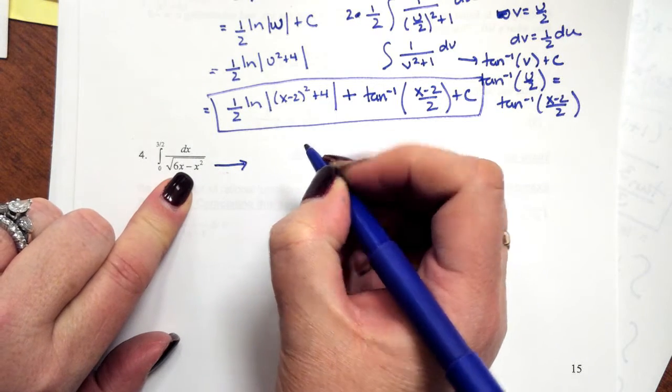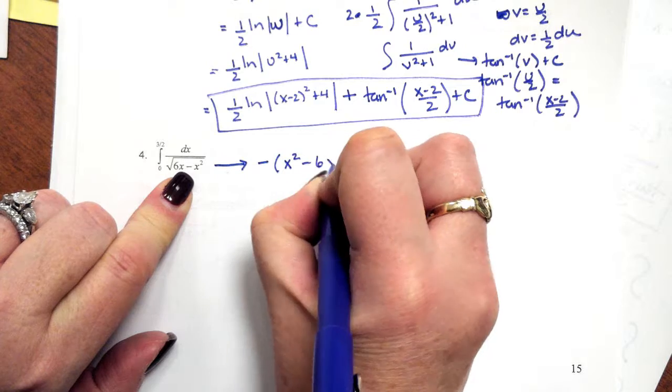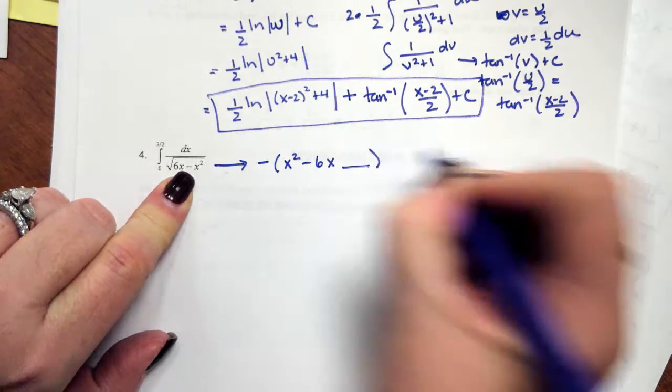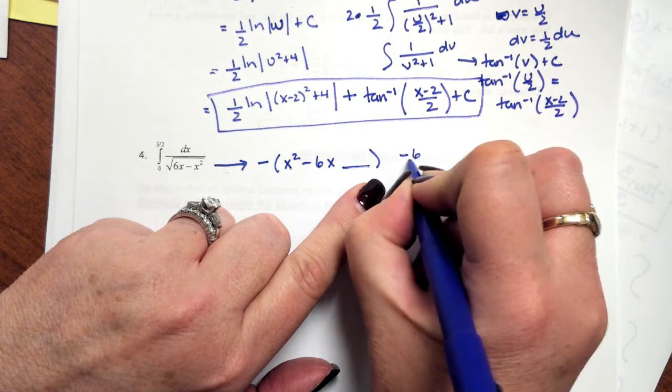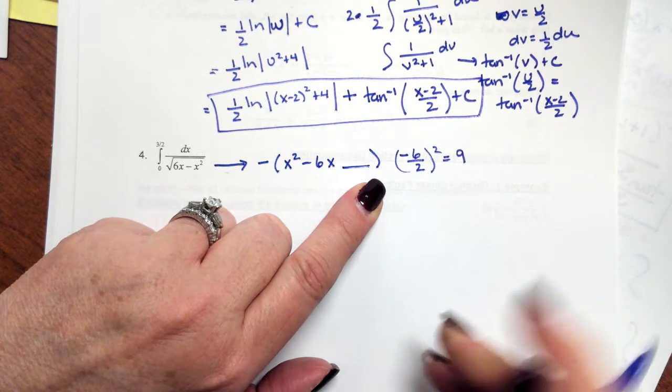What we need to do is factor out that negative sign. So that's going to give us an x squared minus 6x. To complete my square, it's going to be negative 6 divided by 2 squared, which is going to give me 9.